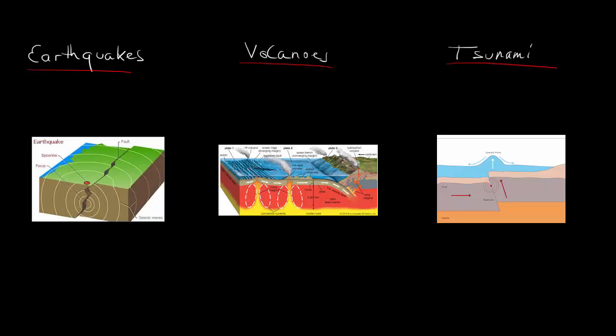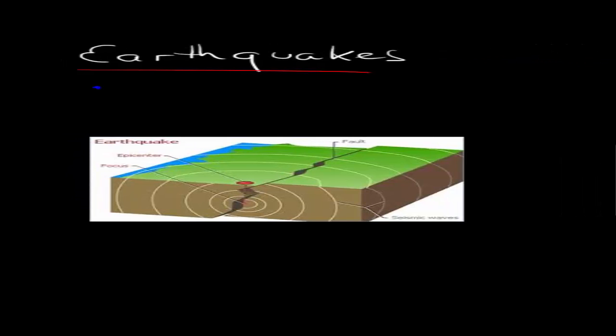Now the first one, earthquakes, occurs at two different boundaries. It's mainly the transform boundary, but also occurs at the convergent boundary. These two boundaries are mainly responsible for most of the earthquakes.